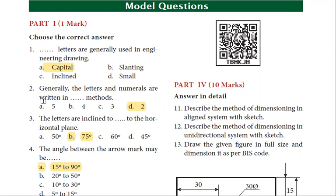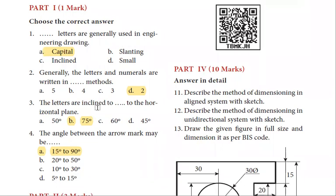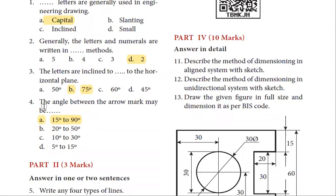And numerical are written in 2 methods - one way vertical method, another one inclined method. Next, the letters are inclined to horizontal. How inclined? To 75 degrees. Next, the angle between arrow mark may be, maybe arrow mark, total angle 15 to 90 degrees.